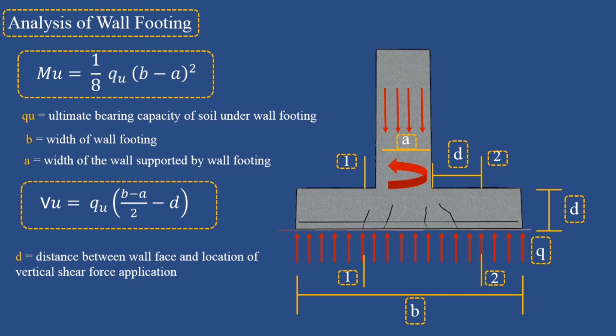Development length calculation is based on the section of maximum moment, where d is the distance between the wall face and the location of vertical shear force application, equal to the effective depth of the wall footing section.